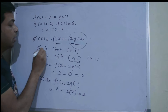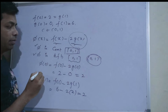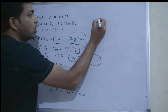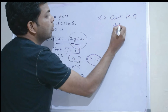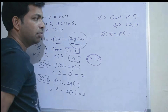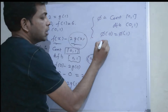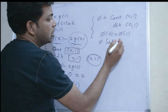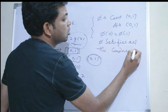Now observe: φ is continuous on [0, 1], φ is differentiable on (0, 1), and φ(0) = φ(1). This means these are exactly the conditions of Rolle's theorem. So φ satisfies all the conditions of Rolle's theorem.